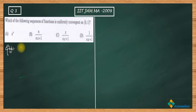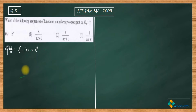The first sequence of functions is f_n(x) = x^n. We have to find out whether they are uniformly convergent or not. For that, we have to evaluate the pointwise limit for this function, and on that pointwise limit we will check whether they are uniformly convergent or not. The first step to determine uniform convergence is to determine the pointwise convergence.